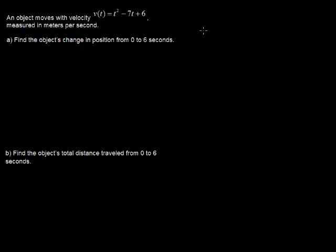In this video, I'll talk about net change, or displacement of an object, as well as the total distance traveled. Our example is: an object moves with velocity v(t) = t² - 7t + 6, measured in meters per second. Find the object's change in position from 0 to 6 seconds.